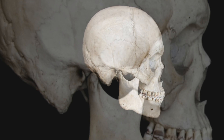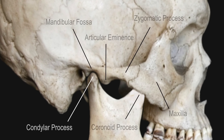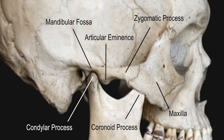The key anatomic structures include the articular eminence cupping the condylar process within the mandibular fossa. The coronoid process, although not a joint, is where the jaw muscles attach to allow mouth opening and closing.